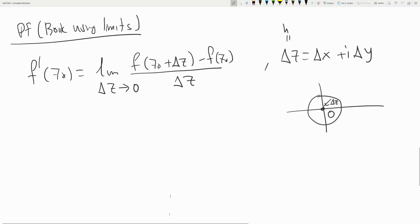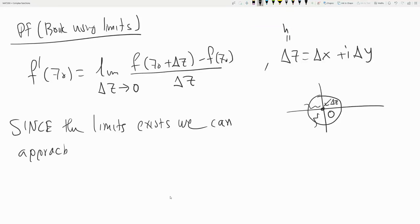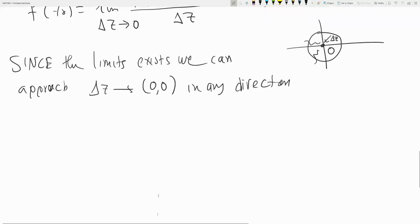But since this limit exists, we can do it in any direction we like. Since the limit exists, we can approach (0,0) in any direction, in any path. To keep it simple, one direction is by letting delta y be zero, so we go along the x-axis.